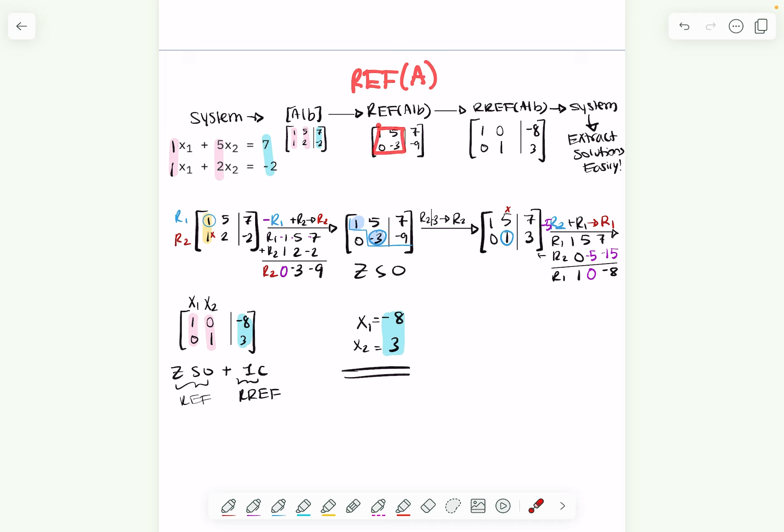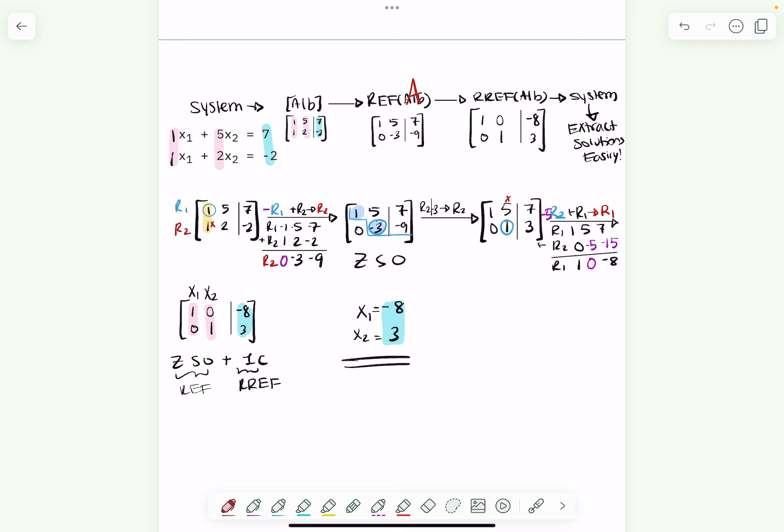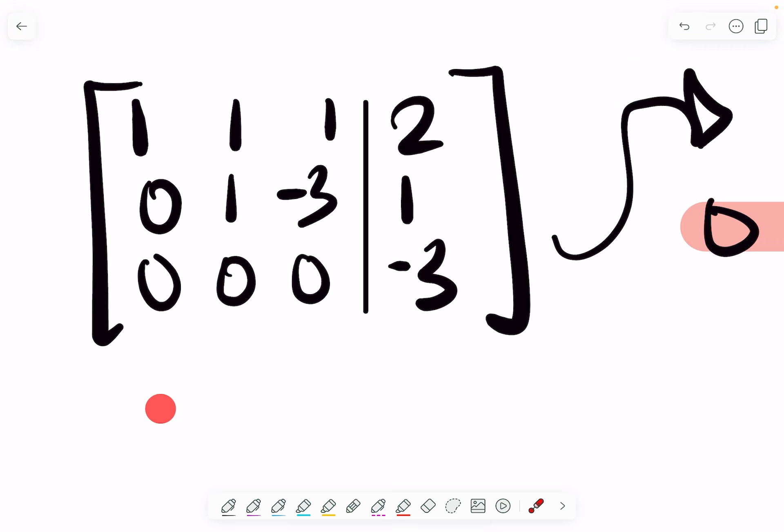So anytime we're checking conditions and finding out if our matrix is in row echelon form, we're only looking at the coefficient matrix, not the entire thing. So technically speaking, this is supposed to be REF of A, and then reduced row echelon form of A, and so on. This only makes the difference when we're talking about vocabulary.